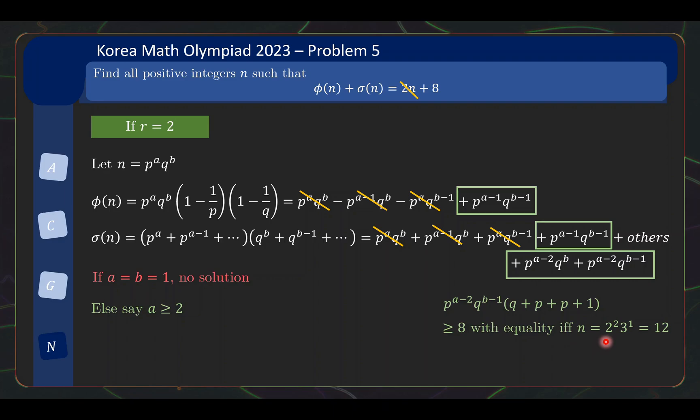So, basically, n equals 2² × 3¹, and just coincidentally, when that happens, the others is going to be empty as well. So, indeed, when n equals 12, this whole part here that is not cancelled out is equal to 8. So, n equals 12 is the only solution for the case r equals 2.